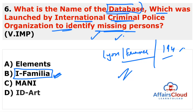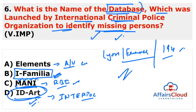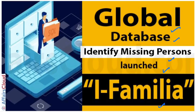Other important options: the Elements application was launched by Vice President Venkaiah Naidu — India's first social media super application for audio, video, calls, and chats. MANI (Mobile Aided Note Identifier) was launched by RBI to help visually impaired people identify currency note denominations. ID-ART was also launched by Interpol to fight against stolen works of art and culture, enabling users to access Interpol's database of stolen art and report cultural sites at risk.